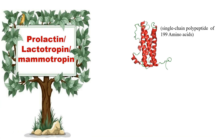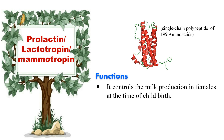Next hormone is prolactin, also known as lactotrophin or mammotrophin. The prolactin hormone has a structure similar to that of growth hormone. It is a single chain polypeptide of 199 amino acids with a molecular weight of 23 kilodaltons. Its function is to control the production of milk in females at the time of childbirth.